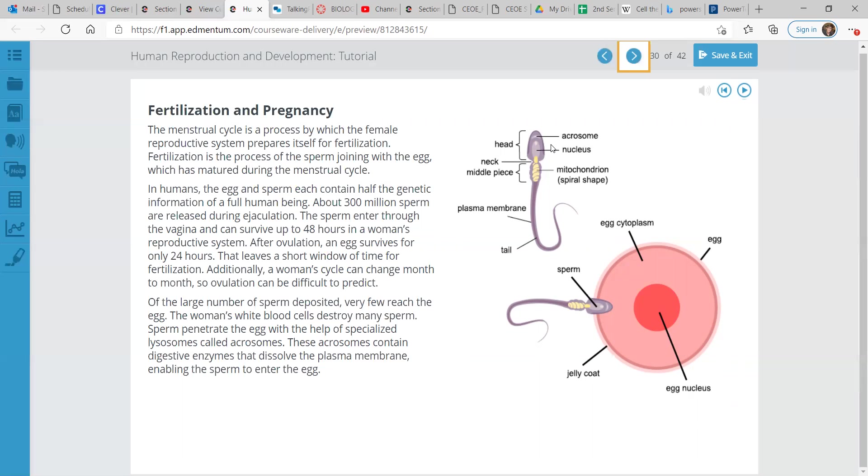Of the large number of sperm deposited, very few reach the egg. The woman's white blood cells destroy many sperm. Sperm penetrate the egg with the help of specialized lysosomes called acrosomes. These acrosomes contain digestive enzymes that dissolve the plasma membrane, enabling the sperm to enter the egg.